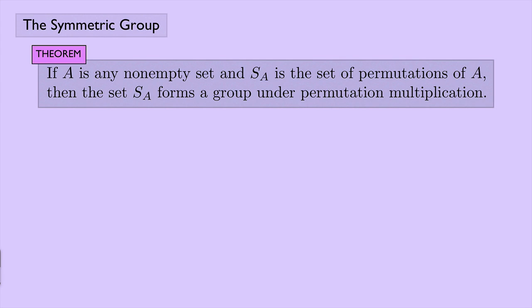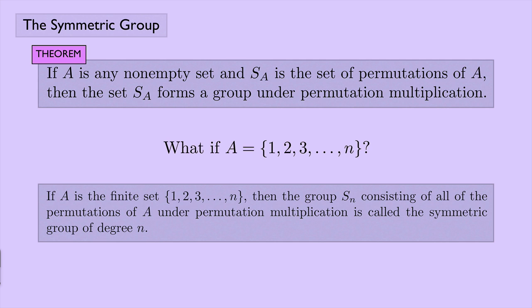Recall that if A is any non-empty set, and S sub A is the set of permutations of A, then the set S sub A forms a group under permutation multiplication. So now I want to ask, what if A is the set 1, 2, 3, all the way up to N? So it's a finite set. Well, if A is the finite set 1, 2, 3, all the way up to N, then the group S sub N, consisting of all the permutations of A under permutation multiplication, is called the symmetric group of degree N.